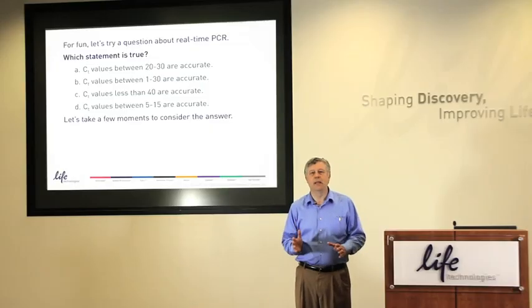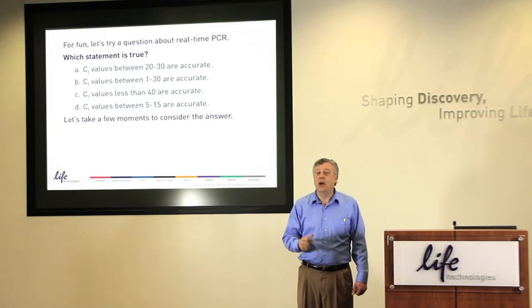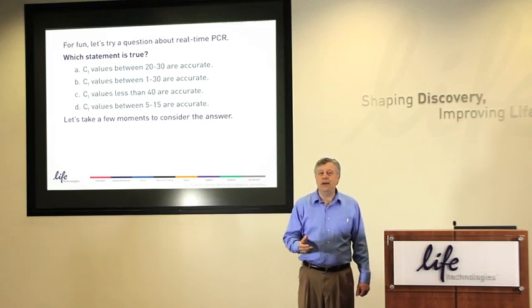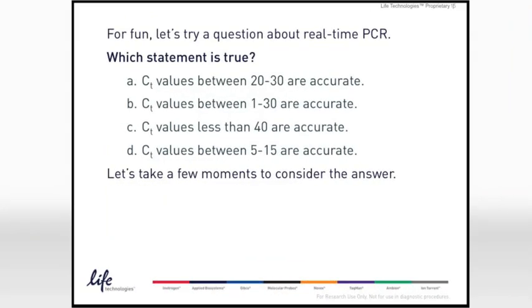For fun, let's try a question about real-time PCR. Which statement is true? CT values between 20 and 30 are accurate? CT values between 1 and 30 are accurate? CT values less than 40 are accurate? Or CT values between 5 and 15 are accurate?